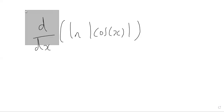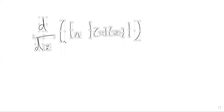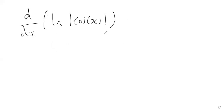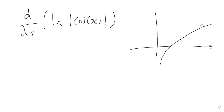Let's think about the domain of possible x values that would allow this derivative to be well defined. When we think about the natural log function, we need to make sure that the values of the variable inside the function are greater than zero, because the ln function is not defined for values of x less than or equal to zero. So we just need to make sure that these modulus of cos of x values are indeed greater than zero.